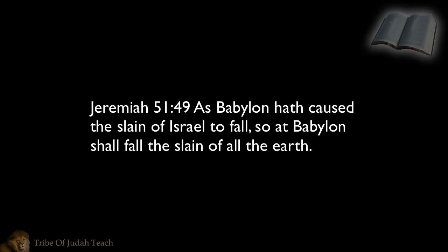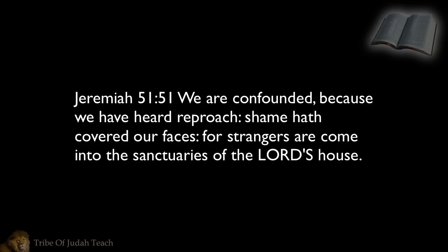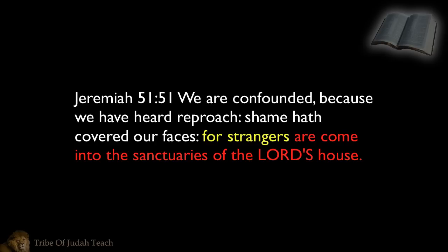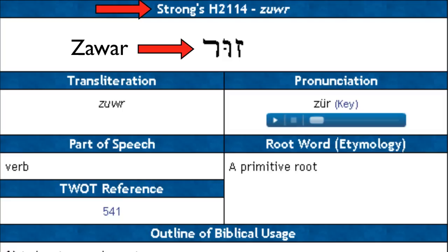Jeremiah 51 and 49. It says, as Babylon have caused the slain of Israel to fall, so at Babylon shall fall the slain of all the earth. So this is talking about the Babylonians when they invaded the land of Israel. Verse 51 — this is how the Israelites felt. It says, we are confounded because we have heard reproach. Shame have covered our faces for strangers are come into the sanctuaries of the Lord's house. Now we know that the strangers in this verse is talking about the Babylonians, and when you look up the word strangers in this verse, it's number 2114 and it's the Hebrew word Zawar. So we see that the word Zawar is used to describe the other nations as strangers.